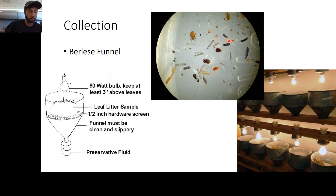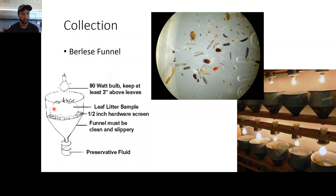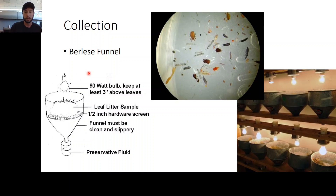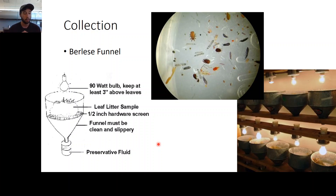There's also the Berlese funnel, which is where you can find smaller creatures that live in leaf litter. You have a large funnel with mesh sieve material under your leaf litter — all of this inside the funnel. At the bottom you have a collection jar, and at the very top, the mouth of the funnel, you have a light source that drives insects downward away from the heat and bright light, and they fall through the sieve into your preserving fluid or collection jar. This is how you find a lot of things like springtails, small mites, or potentially smaller Hemipterans.